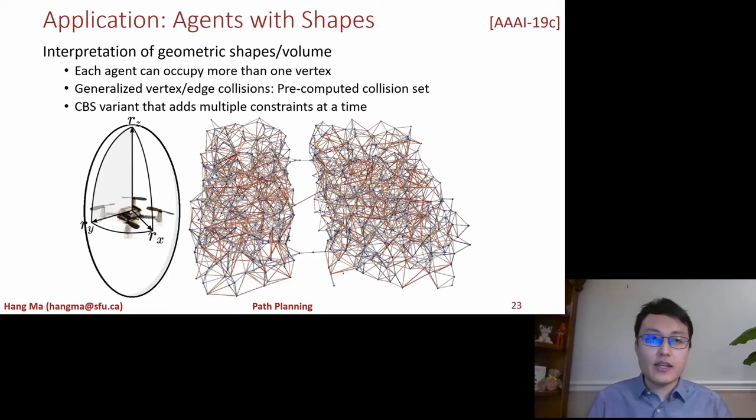We are also looking at different applications of MAPF. So here we are looking at agents that have shapes and volume, so we translate this into a new model where each agent can occupy more than one vertex and we also generalize the vertex and edge collisions. The way to do that is we pre-compute the collision set for each vertex and for each edge. And then we've contributed a new algorithm that is based on CBS by adding multiple constraints at a time but still keeping the completeness and optimality guarantees of CBS. So an idea very similar to the symmetric breaking reasoning for CBS we've talked about earlier.